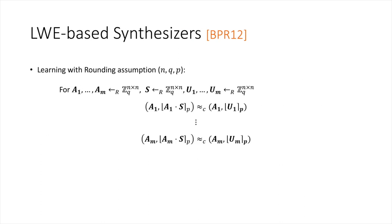Given this intuition, Banerjee et al. introduced the learning with rounding (LWR) assumption, parameterized by N, Q, and a rounding modulus P instead of a noise distribution. The LWR assumption states that for uniformly random public matrices Ai and secret matrix S, the component-wise rounding of the products Ai times S is computationally indistinguishable from the rounding of uniformly random matrices.